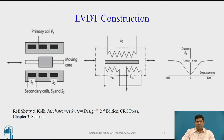Looking at the LVDT construction, you have a primary coil labeled P1 and two secondaries, S1 and S2. These are connected in phase opposition as shown in the circuit diagram. The result is that when the core is in the central position, the voltage in the secondaries is zero. As the core moves, voltage will be developed in the secondaries, and there is a linear range which is the good range for measurement.